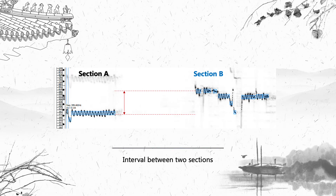The second feature is about the interval between two sections. We are interested in this because we want to understand how different sections connect together in terms of melody. The notes are represented in blue boxes, and we are specifically interested in the interval between the last note of section A and the first note of section B.